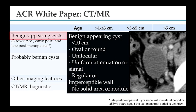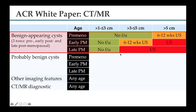For benign-appearing cysts in a young woman, up to 5 cm nothing needs to be done; after that, ultrasound at 6 to 12 weeks hoping the lesion resolves. In early postmenopausal women, nothing is needed if the lesion is less than 3 cm; more than 3 cm warrants ultrasound at 6 to 12 weeks or immediately. In a late postmenopausal woman, the threshold is lower, so ultrasonic evaluation is obtained immediately.